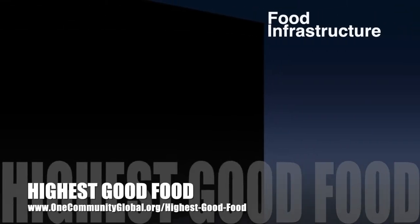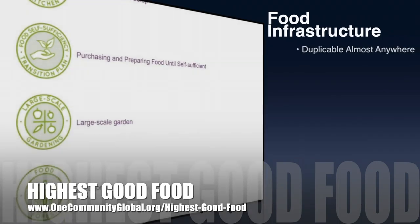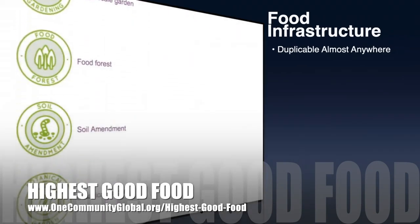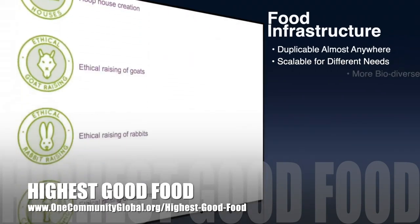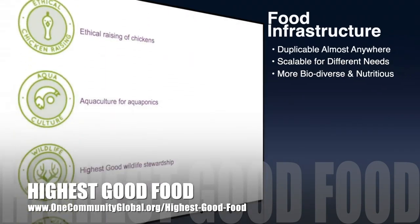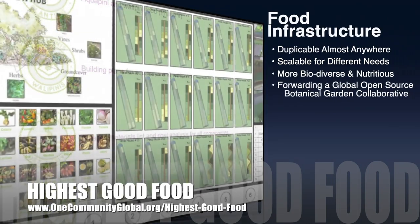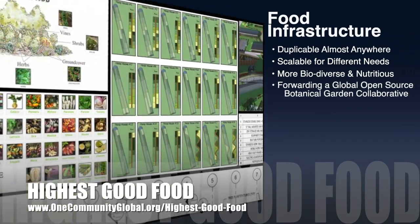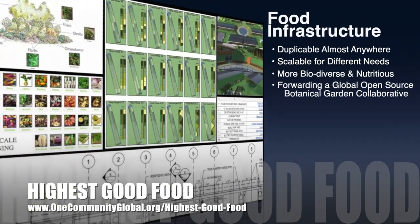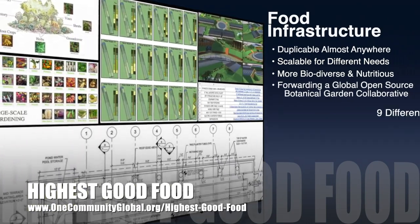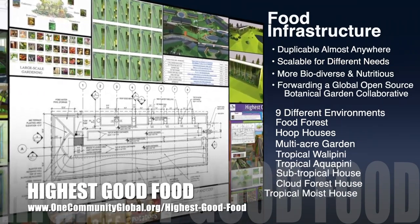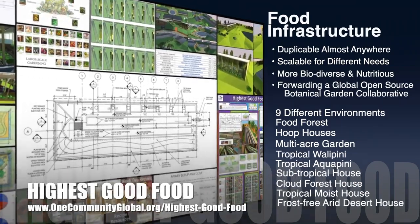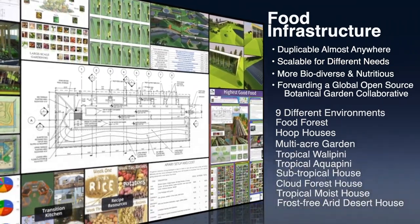One Community's approach to highest good food is duplicable almost anywhere, scalable for different needs, more biodiverse and nutritious, part of forwarding a global open source botanical garden collaborative, and includes nine different free shared and duplicable growing environments.